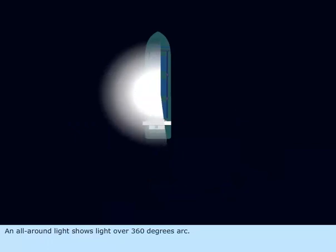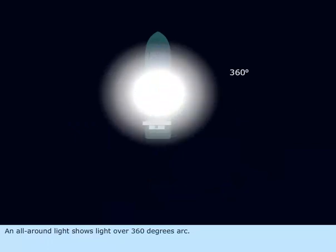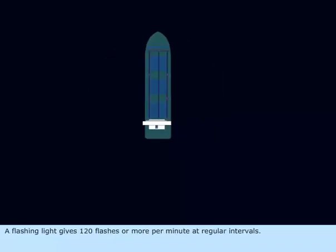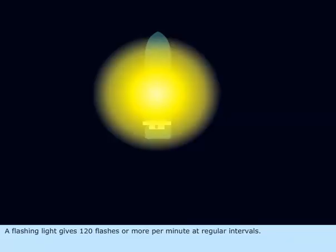An all-around light shows light over a 360-degree arc. A flashing light gives 120 flashes or more per minute at regular intervals.